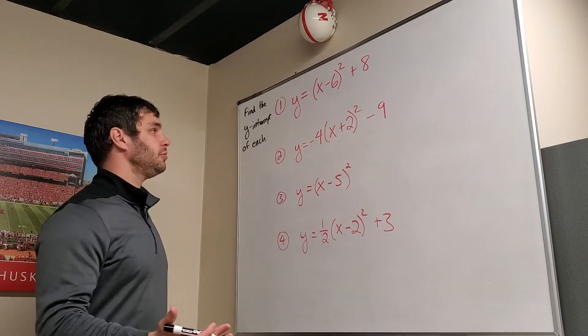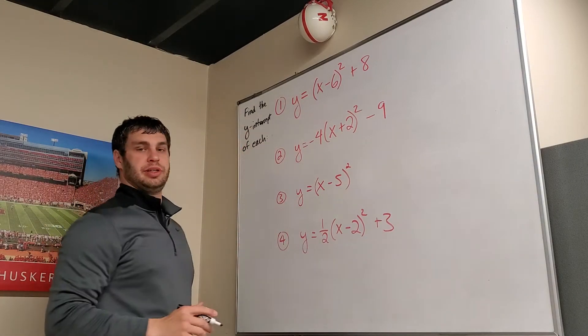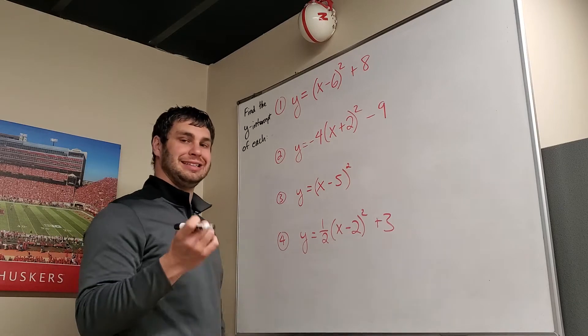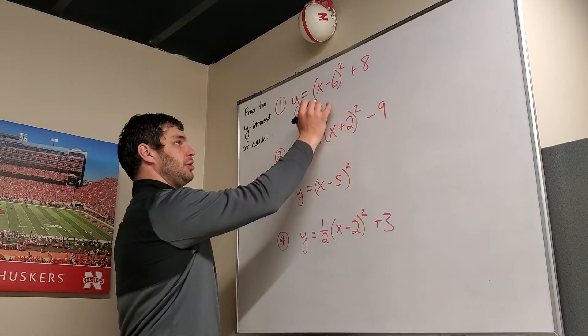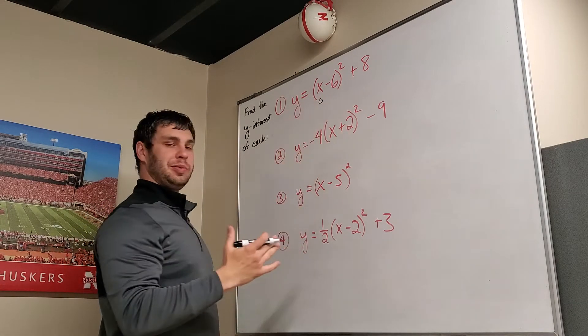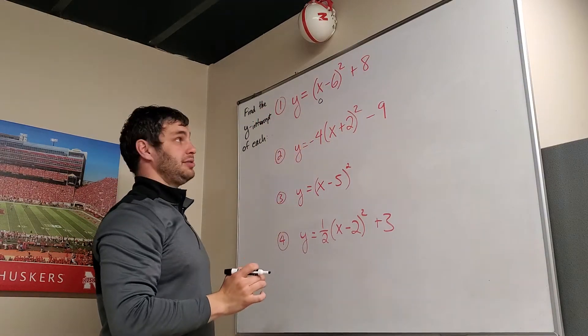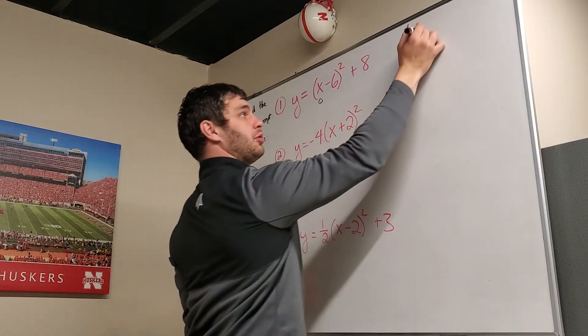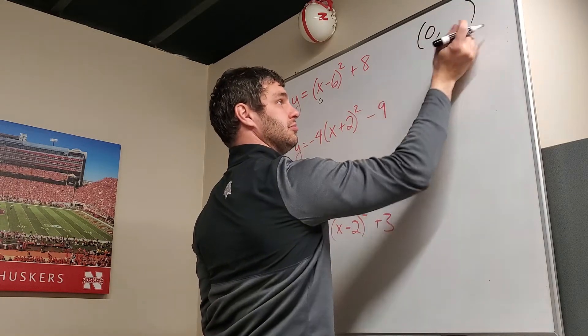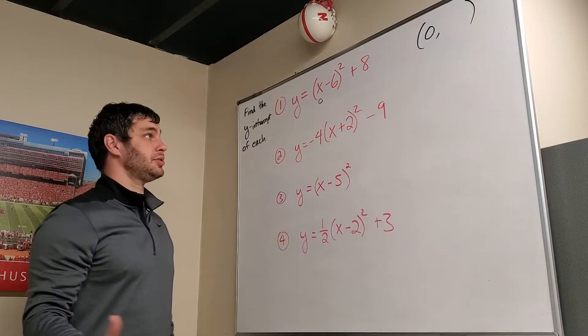For these problems, what we want to do is find the y-intercept of each. We find the y-intercept by plugging in 0 for x. So we replace x with 0, and then we just want to know what this equals, and we're going to say that's the y-intercept. It's going to be written in the form (0, some number), whatever y is.